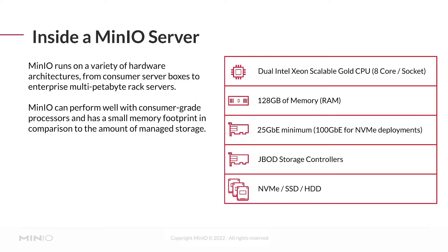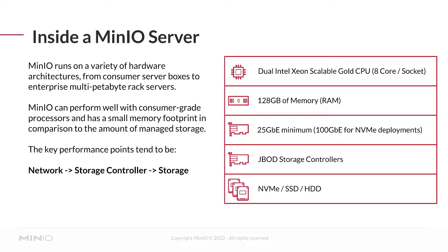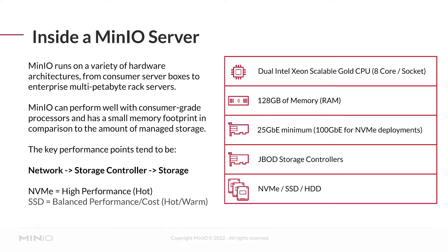Memory tends to constrain the maximum number of concurrent connections per node — it doesn't need to scale with the amount of storage. You can have a relatively small amount of memory with terabytes or petabytes of storage, and monitor and scale memory up or down as needed. Since system memory tends to be expensive, this can be a significant cost saving. The key performance points don't reside on the compute layer — it's usually the network first.